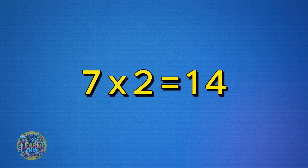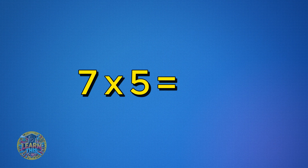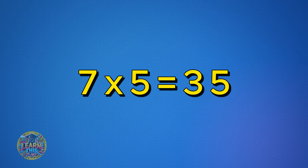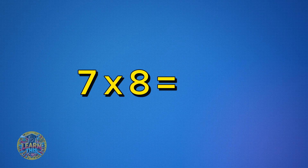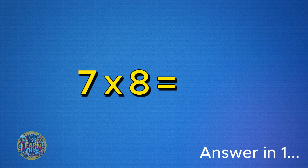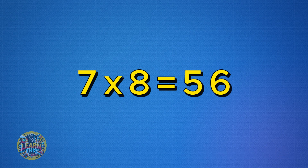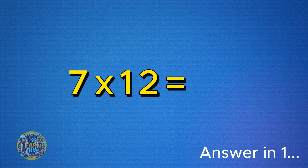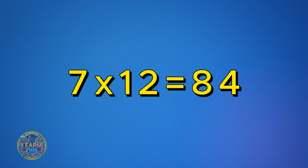Seven times two is 14. Seven times five is 35. Seven times eight is 56. Seven times twelve is 84.